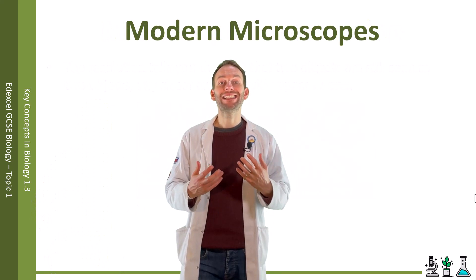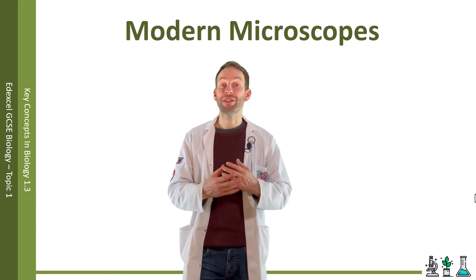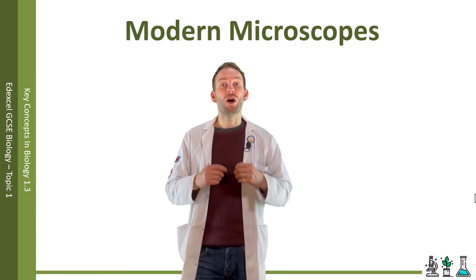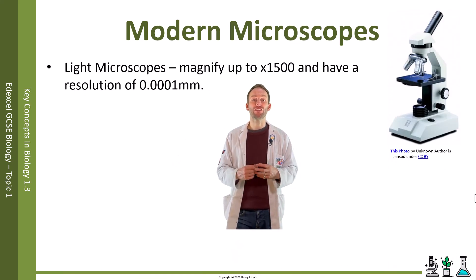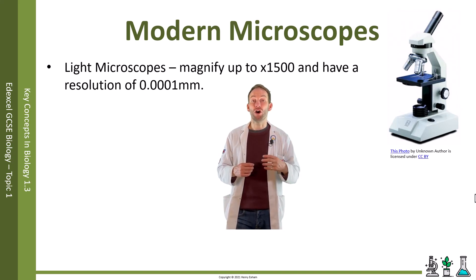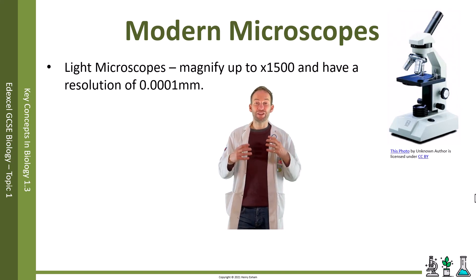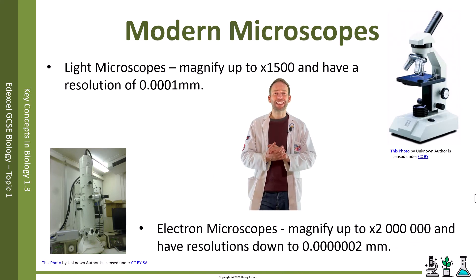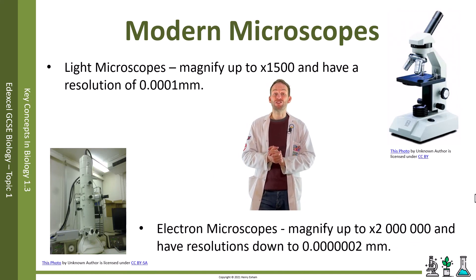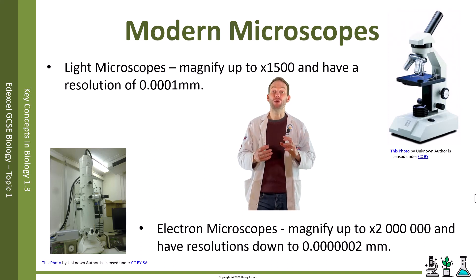With the improvement in lenses and the use of stains to highlight specific structures more clearly, modern light microscopes have a magnification of x1500 and a resolution of 0.0001 millimeters. In the 1930s, though, the electron microscope was invented. It uses beams of electrons rather than light, and can magnify up to two million times with resolutions down to 0.0000002 millimeters.